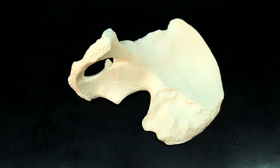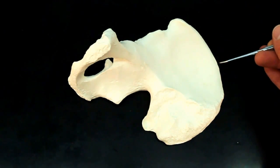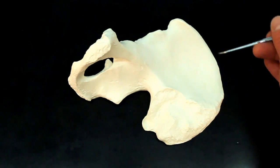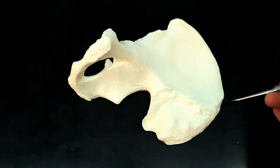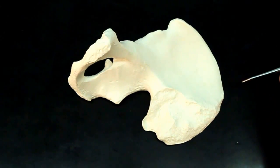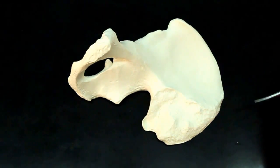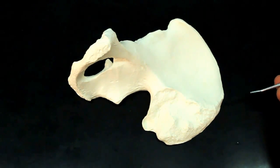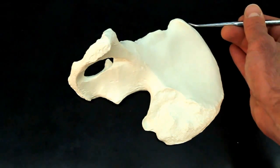Now if we start with the ilium region, this ridge of bone right up top, this is going to be your iliac crest. A lot of times when people can feel a bone on their hip, they say that's your hip bone. What you're actually feeling is part of your iliac crest.